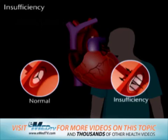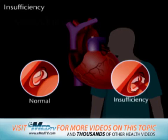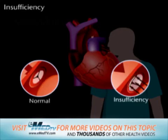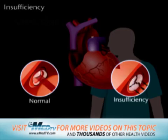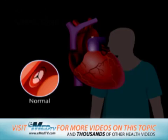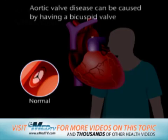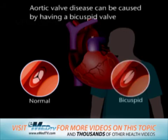Insufficiency can be caused by a valve that has simply become weak over time and is beginning to wear out. In younger patients, aortic valve disease can be caused by having a bicuspid valve, which has only two leaflets instead of three.